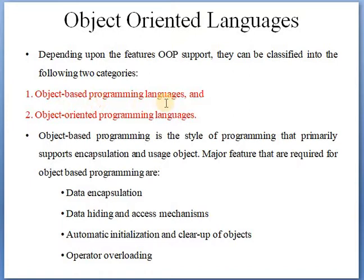First, object based programming languages. Object based programming language is the style of programming that primarily supports encapsulation and usage of objects. These languages support encapsulation and object usage without supporting important features of object oriented languages like polymorphism, inheritance and message passing. Object based programming has some major features like data encapsulation, data hiding access mechanism, automatic initialization and clear up of objects, and operator overloading.